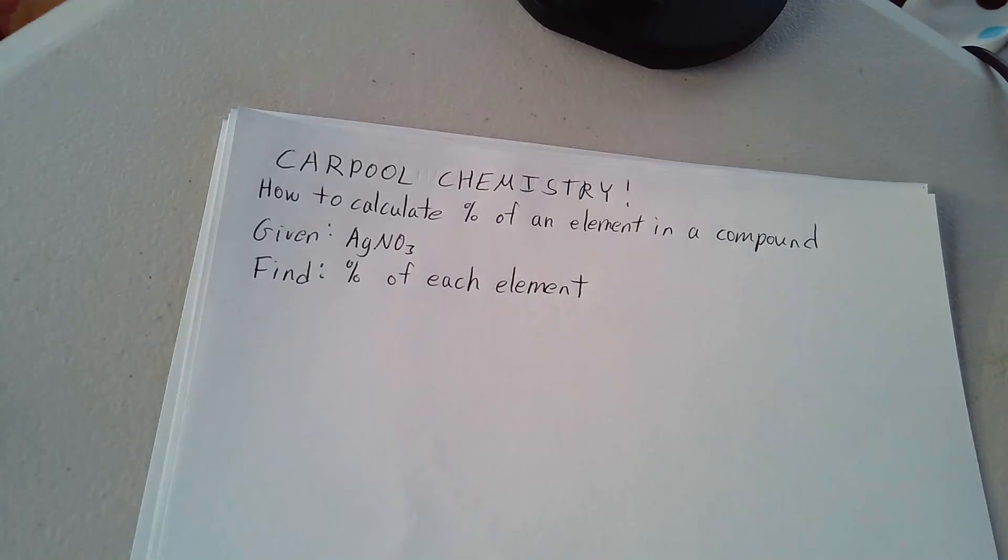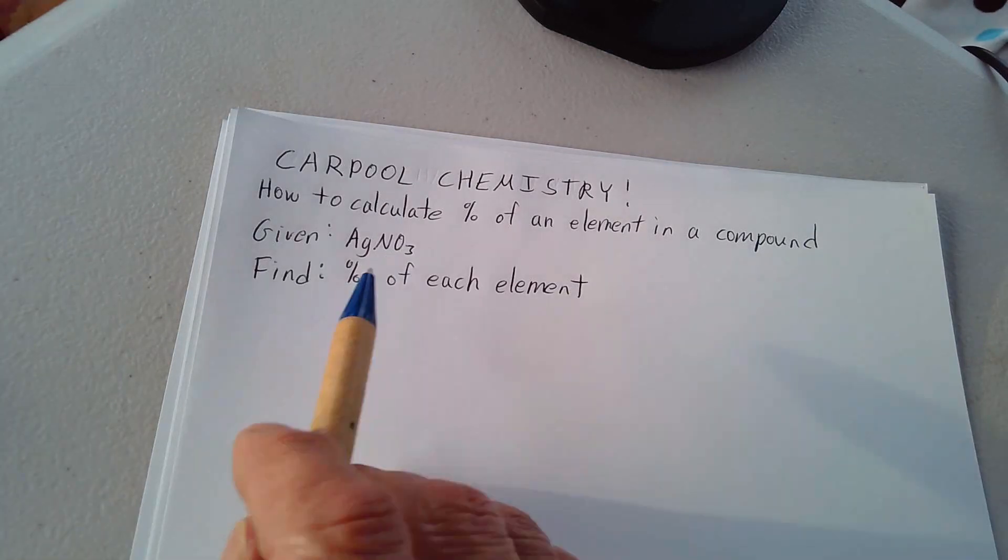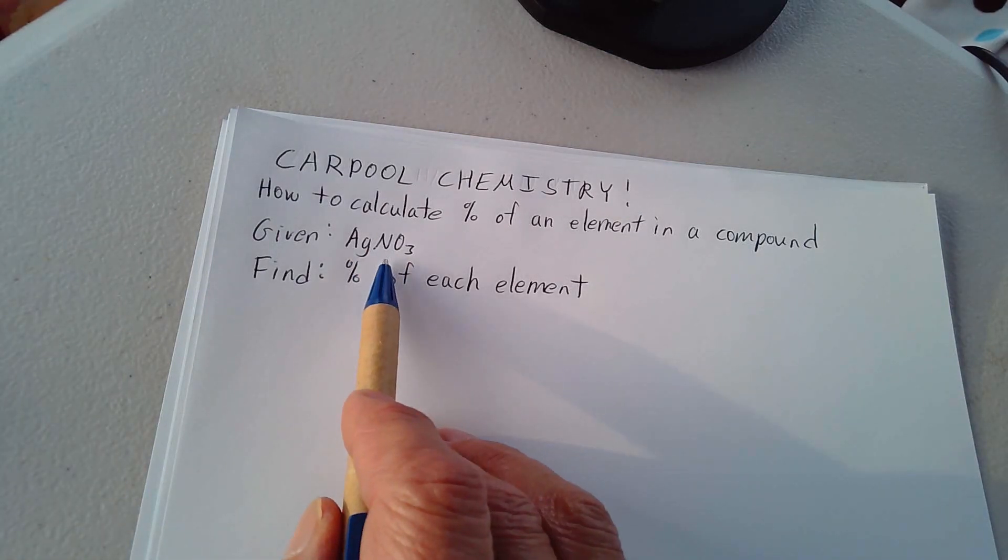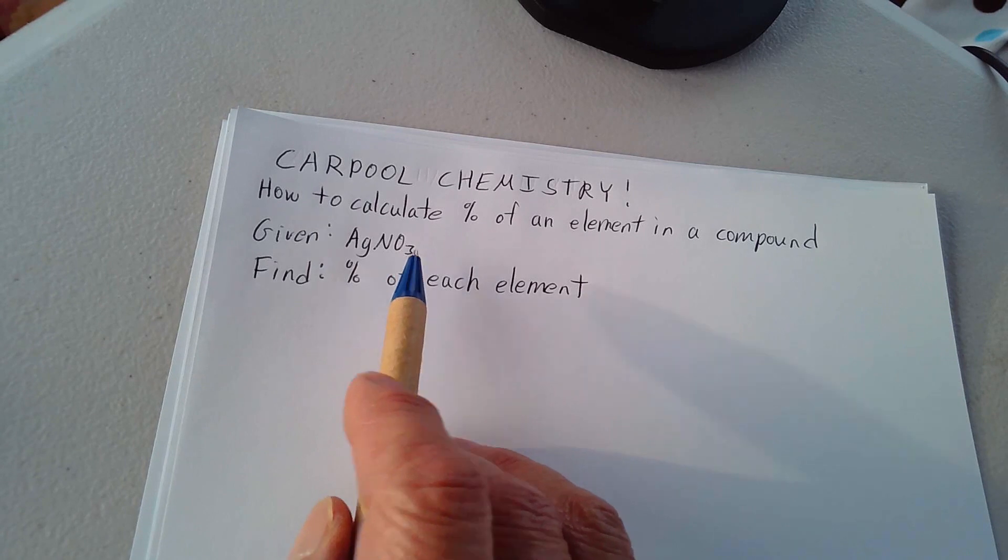Today we're going to learn how to calculate the percent of an element in a compound. Let's take a look at silver nitrate, AgNO3. It has one atom of silver, one atom of nitrogen, and three atoms of oxygen.